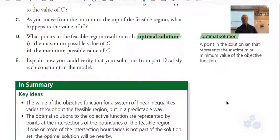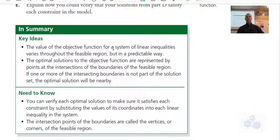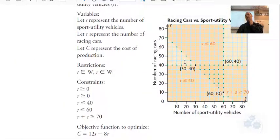In summary, the optimal solution is the point in the solution that represents the maximum or minimum value for the objective function. We had two solutions there: one maximizing the cost, one minimizing the cost. But usually the question just asks for one. Key ideas: the value of the objective function for a system of linear inequalities varies throughout the feasible region but in a predictable way. The optimal solutions are represented by points of intersection of the boundaries of the feasible region. That's the main point in this whole lesson. You can verify each optimal solution by substituting into any of the linear inequalities. The intersection points of the boundaries are called vertices or corners of the feasible region. So that's the lesson on where to find your optimal solutions—they're going to be at the corners of the feasible region.